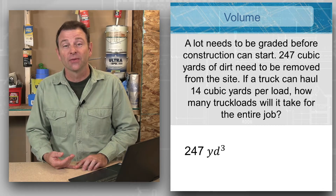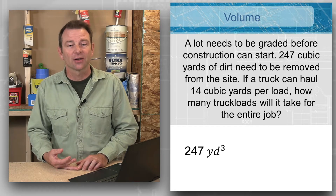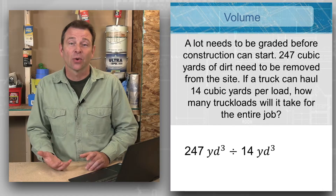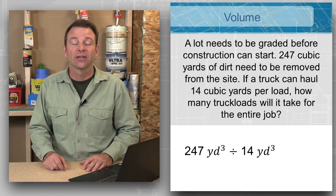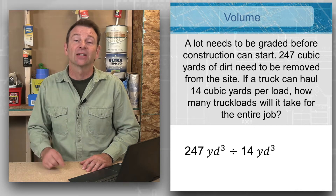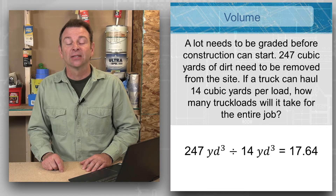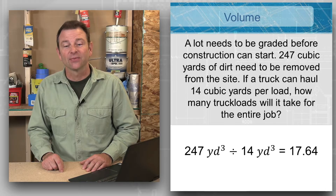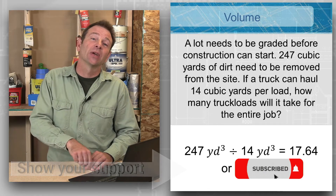What we know is that there's a total of 247 cubic yards to remove, and we know that one truck load is going to be 14 cubic yards. The question is how many loads. So we're going to take our 247 cubic yards and divide it by the 14 per truck, and it's going to give us the number of loads. 247 divided by 14 cubic yards is going to be 17.64 loads.